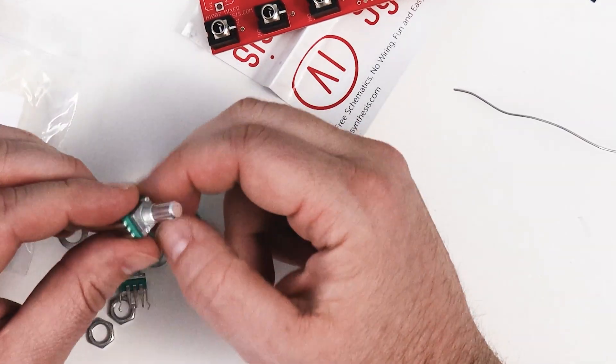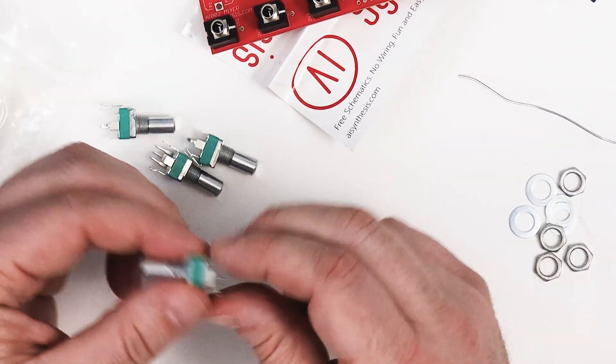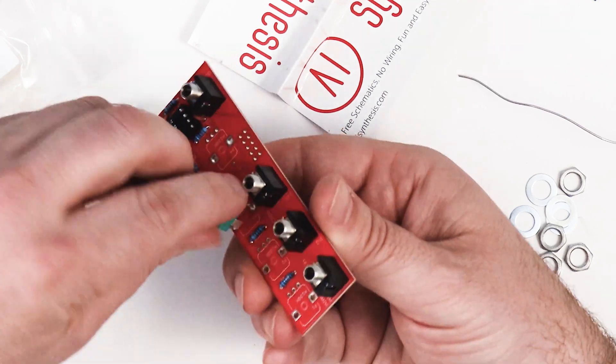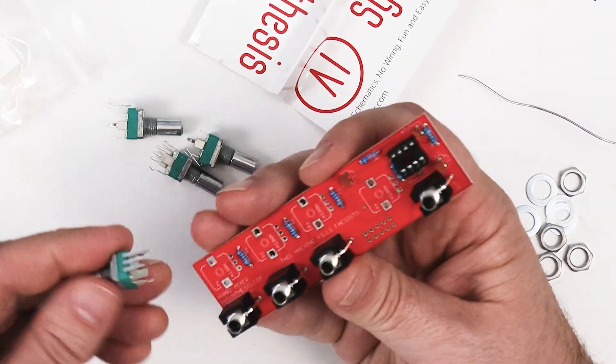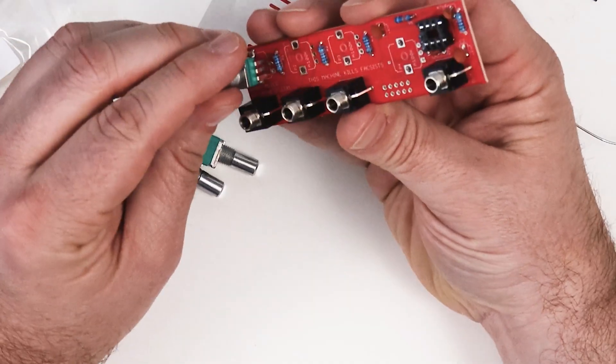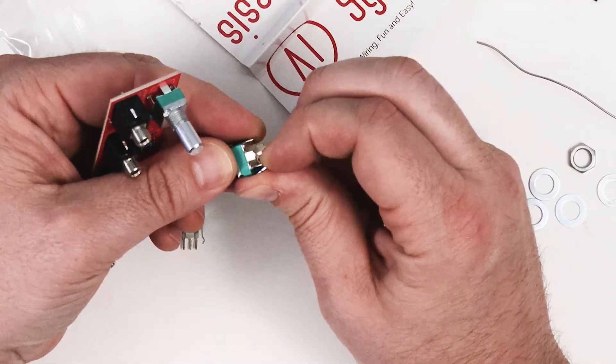And here are the pots. Now in the build video on AI Synthesis website, it suggested that there might be little nibs that stick up. I didn't have that issue with either of these. I did find them kind of challenging to get in at first, it just took some figuring out.